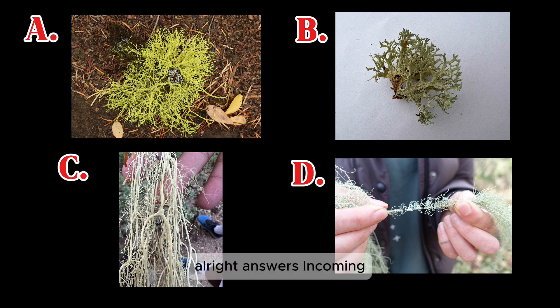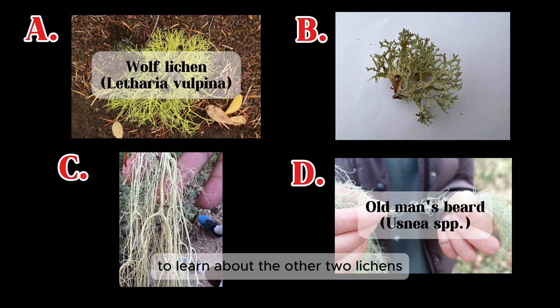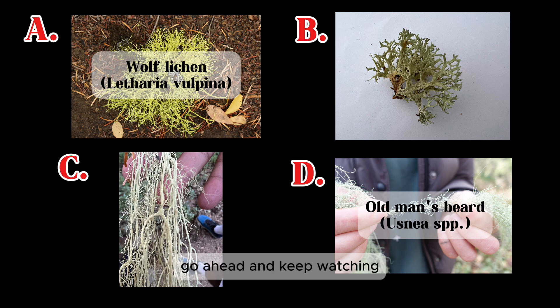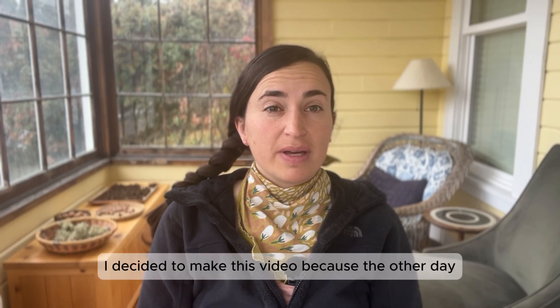Answers incoming: A is wolf lichen and D is usnea. To learn about the other two lichens and how to tell all of these lichens apart, keep watching.